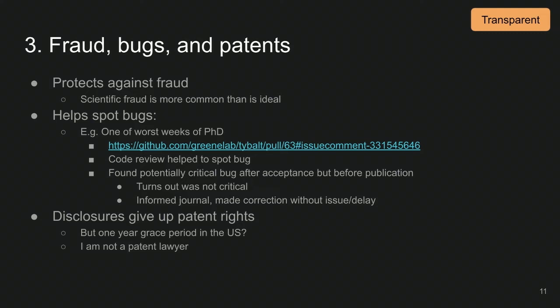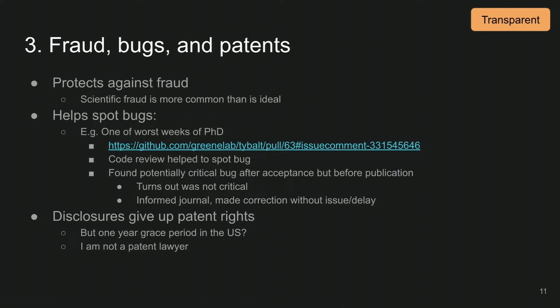Scientific fraud is unfortunately more common than ideal, and open science lab notebooks help spot bugs. During the speaker's PhD, a paper was accepted to a conference in Hawaii and then an off-by-one error was found through code review. It turned out not to change the results all that much, but it was a nice way to spot the bug, because it's far worse to find it after publication.